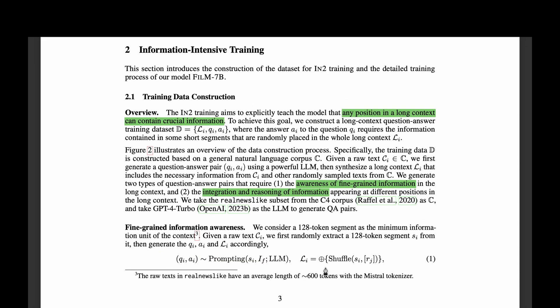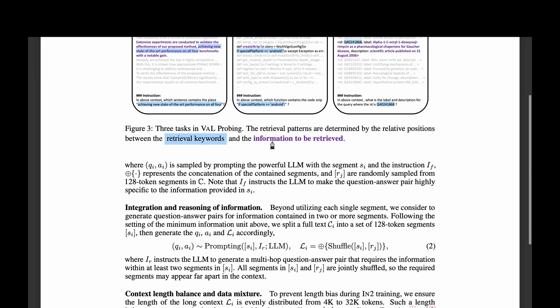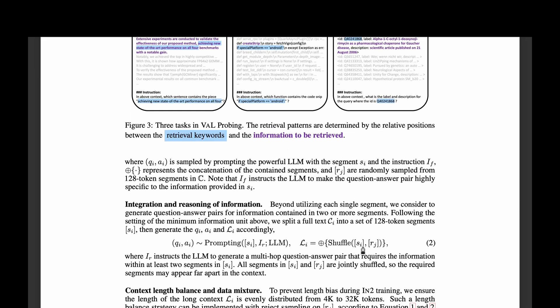So mathematically, for the fine grained information awareness, they've given this equation where we have the single segment SI, and there's a bunch of other segments, which is a set we shuffle and concatenate them to form the long context. Similarly, in the other one, we do the same, but we have a set of segments instead of just SI. And we also shuffle the combination of all of these and then concatenate them to form the long context LI.